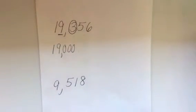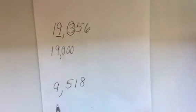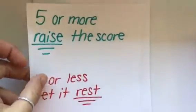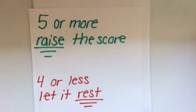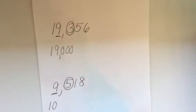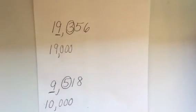This last one I'll look at just because sometimes it can be a little bit tricky the first time. We have 9,518, again rounding to the nearest thousand. We're going to underline the number in the thousands place, circle the number directly to the right, and decide: five or more raise the score, or four or less let it rest. We have a five in the circle, which means we're going to raise the score — that nine is going to increase to a ten. There's nothing else to the left, so everything to the right becomes a zero and it turns into 10,000.